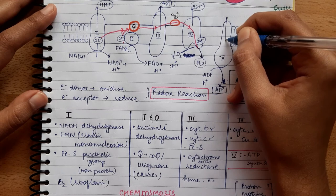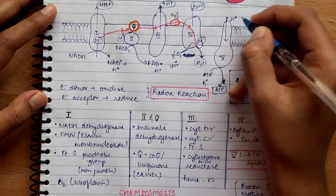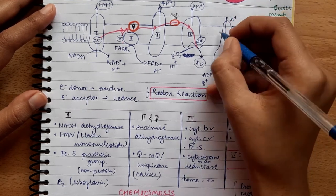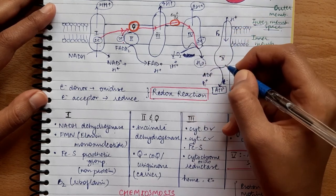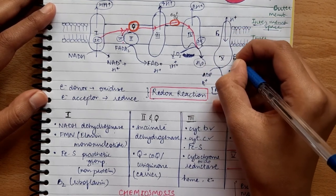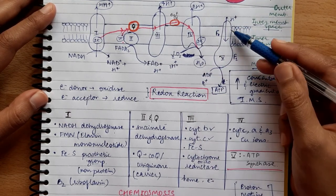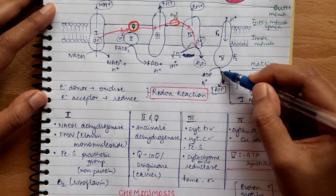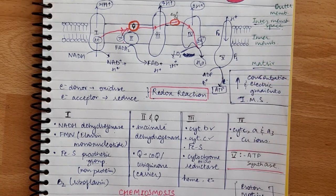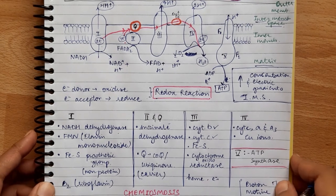ATP synthase has two parts: the F0 part, which is embedded in the membrane and pumps the protons, and the F1 part, which carries out the formation of ATP. So ATP synthase has two functions: pumping protons and forming ATP. The FADH2 entering Complex 2 comes from the citric acid cycle.